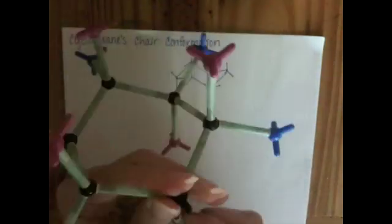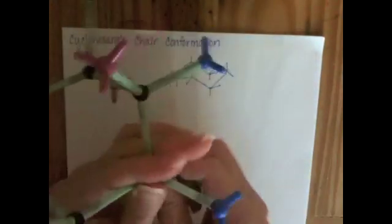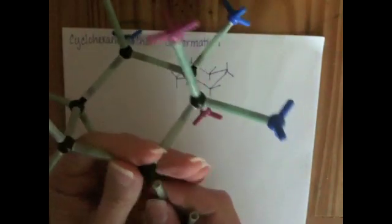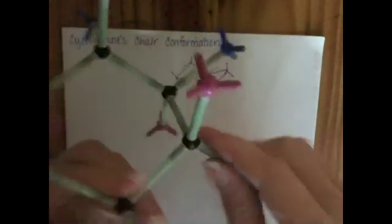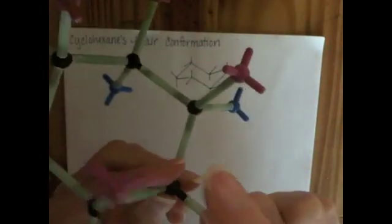On the cyclohexane, any hydrogen atom or substituent that's pointing up, whether it's straight up or angled up, axial or equatorial, those substituents are on the same side of the ring.